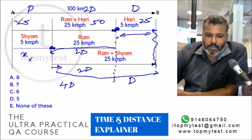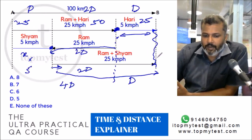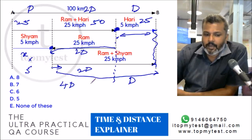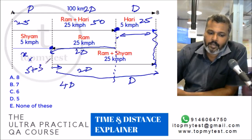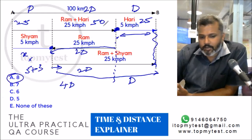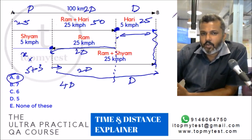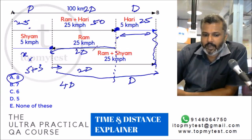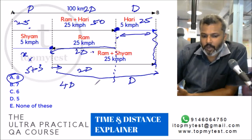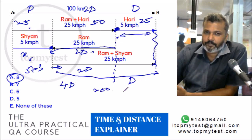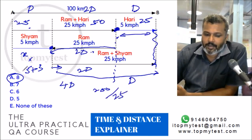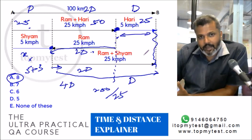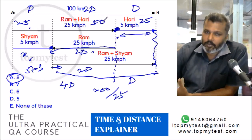Now we can compute total journey time using Sham's trip: Sham walks 25 km at 5 km/h = 5 hours, then rides 75 km at 25 km/h = 3 hours. Total: 8 hours. We can verify with Ram: Ram's total distance is 25 + 50 + 75 + 50 = 200 km at 25 km/h = 8 hours. If you know how to use proportionality you can solve these questions very quickly.